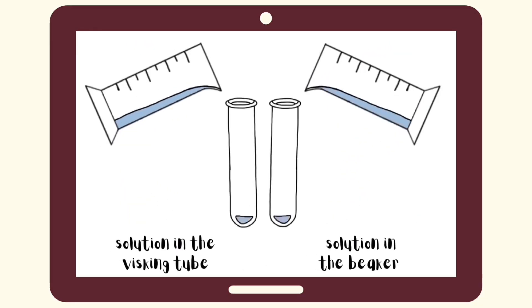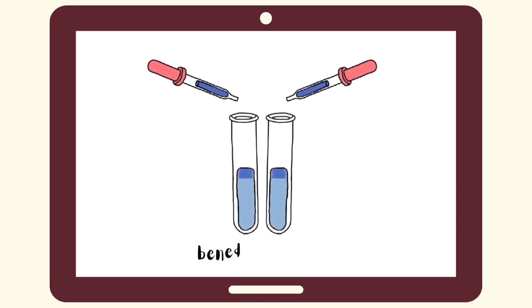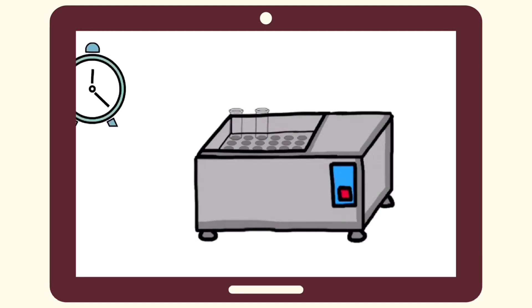After that, conduct the Benedict's test on the solutions in the visking tubing and in the beaker. Put 2ml of each solution into separate test tubes and add 1ml of Benedict's solution. Heat the solutions in the water bath for 5 minutes and record any changes in color.